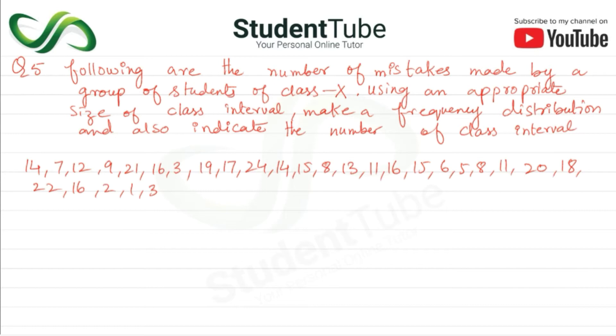The class interval size is 5, which is 1 to 5, just like we did in the previous question. You can put 5, 10, 3, or 4 - this depends on how much your data is bigger. After this, we have to create a frequency distribution, which means a table, and also indicate the number of class intervals, which means the total of class intervals.